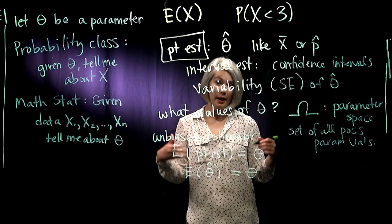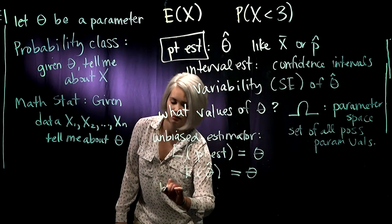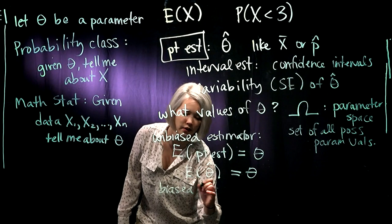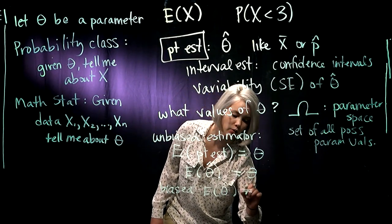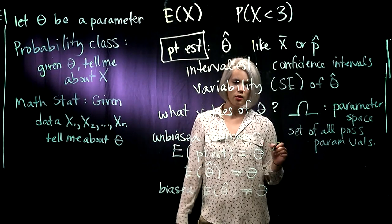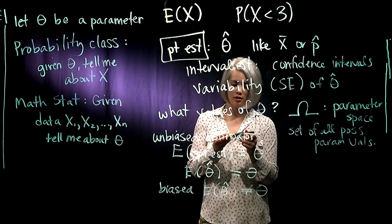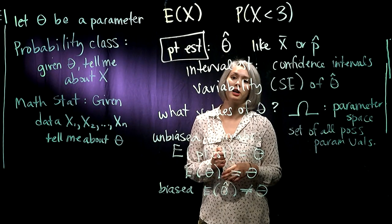If we have a biased estimator, then that means the expectation of θ̂ is not equal to θ. So that is, in a nutshell, some of the things we're going to be talking about when we talk about point estimates.